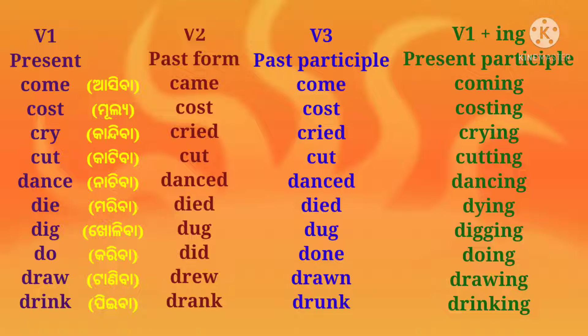Cry (kandiba): second form — cried; third form — cried; fourth form — crying. Cut (cutiba): second form — cut; third form — cut; fourth form — cutting. Dance (nachiba): second form — danced; third form — danced; fourth form — dancing.